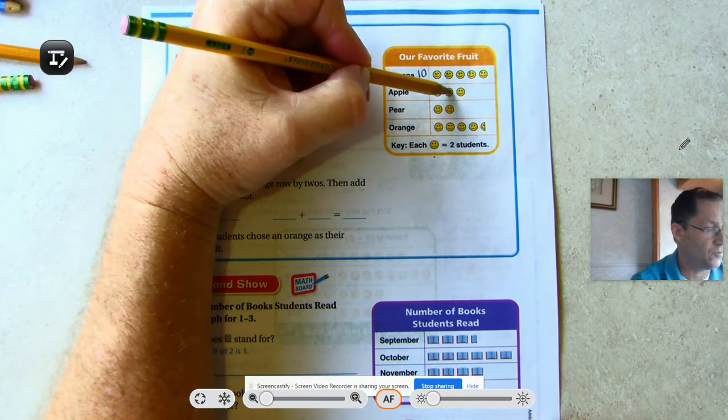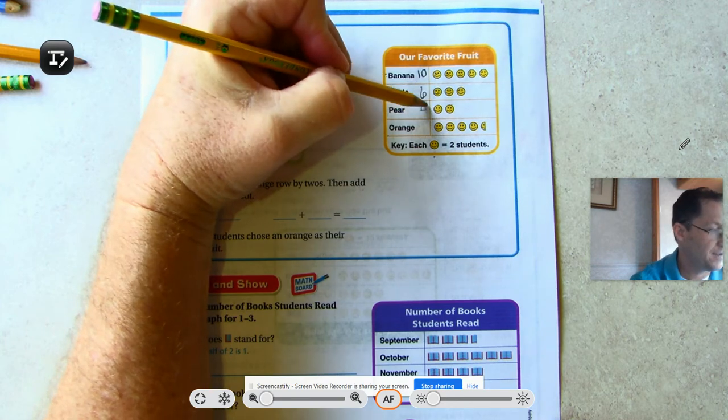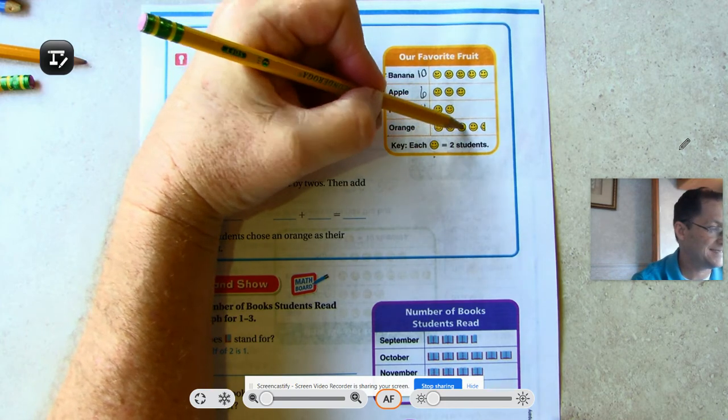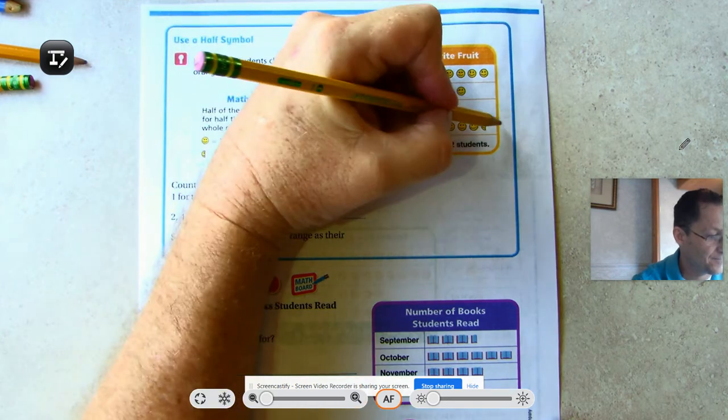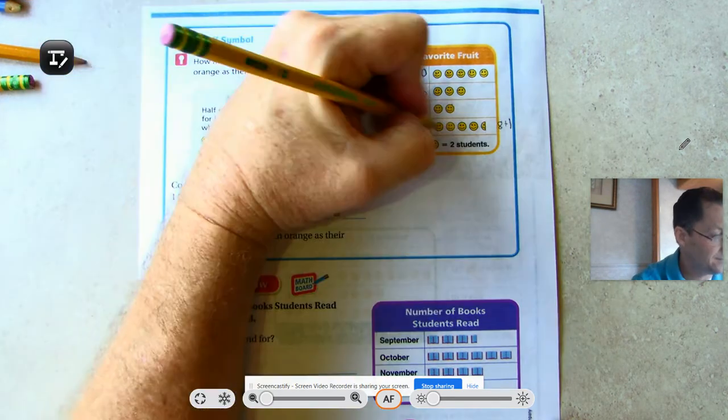Apple: 2, 4, 6. Pear: 2, 4. Orange: 2, 4, 6, 8, plus half, which is one, so nine.